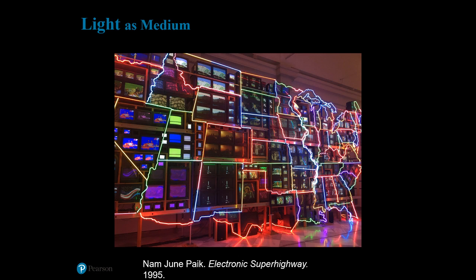Your book also talks about the use of actual light in works of art. Some artists use artificial lights as their medium. Nam June Paik's Electric Superhighway is a 51-channel video installation in the shape of the United States, with neon light outlining the monitors to evoke the idea of motel lights and restaurant signs seen along the interstates. Paik was actually the first person to use the phrase 'electronic superhighway,' aware in 1995 that Americans shared this connection through electronic media. The work also suggests that North American identity has always been heavily influenced by film and television.